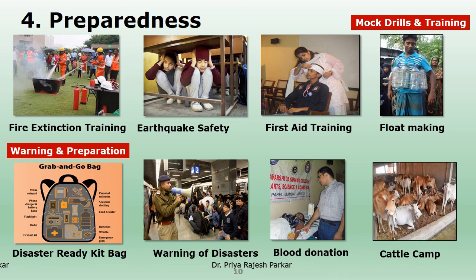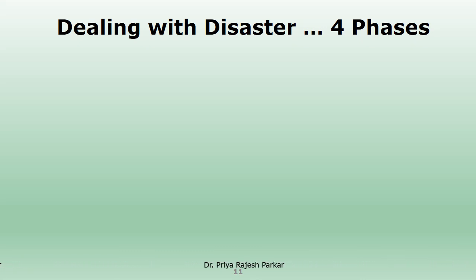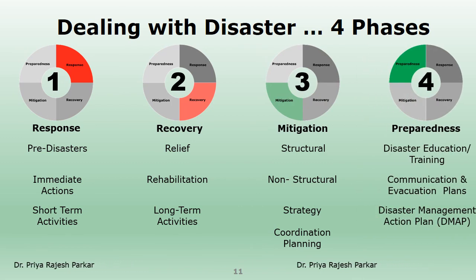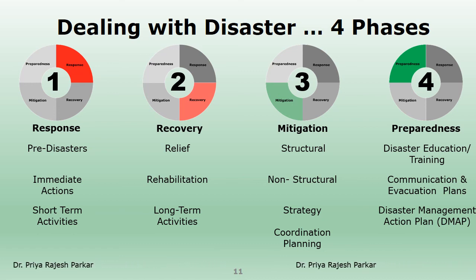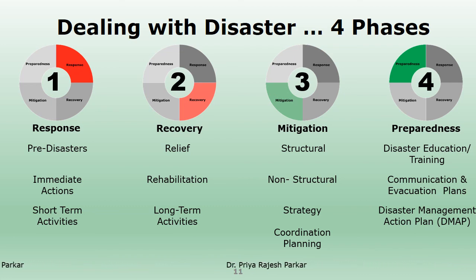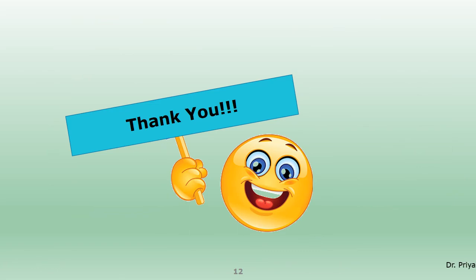In rural areas, cattle are moved to cattle camps to save them from starvation during drought. So students, we have learned that broadly there are four phases of dealing with disasters: Response, Recovery, Mitigation, and Preparedness. Response and recovery take place during or after disasters, while mitigation and preparedness take place before disasters. All these phases are interrelated with each other and should be well planned in advance to reduce casualties and losses.